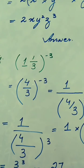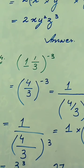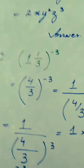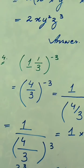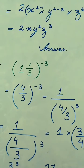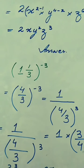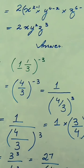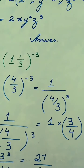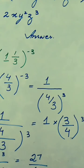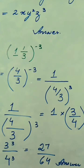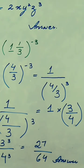Here we have another question: one and one-third, raised to the power minus 3. First we convert the mixed number, which becomes 4 over 3, raised to the power minus 3. To remove the negative power and convert to positive form, we divide by 1, flipping the fraction so the denominator becomes the numerator and vice versa. It becomes 1 times 3 over 4, whole to the power 3. And the answer becomes 27 over 64.